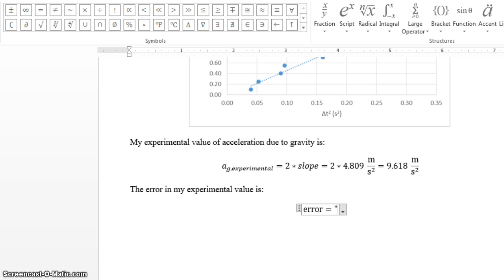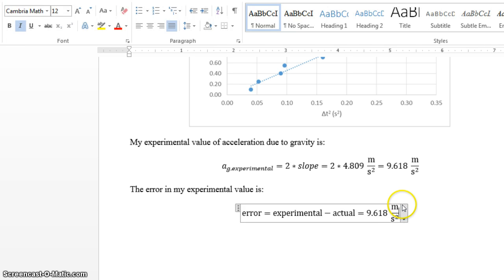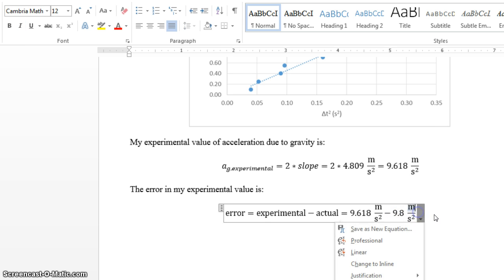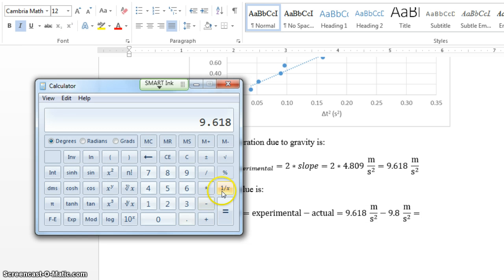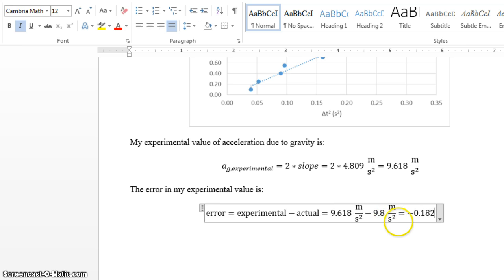Equals, what's the equation for error? It's the experimental minus actual. So now we plug in the value. What's my experimental value? It's 9.618, make sure you include the units, space, minus, what's the actual value? 9.8 is what we use, meters per second squared, space again, deitalicize units. I like to space between my value and the unit, and then we go back into the equation builder. What is the difference here? That minus 9.8 is negative 0.182 meters per second.